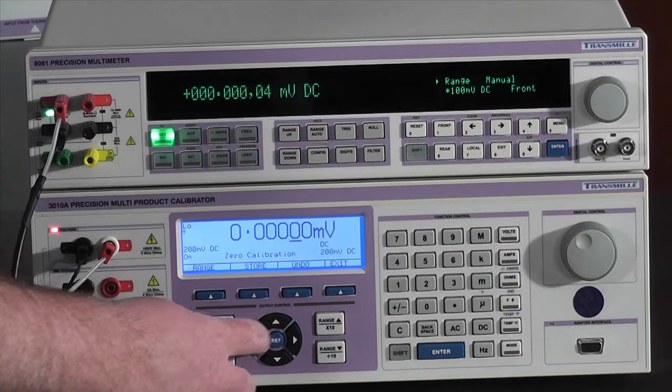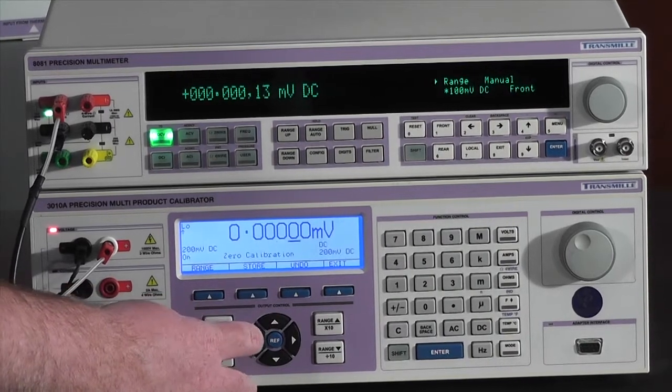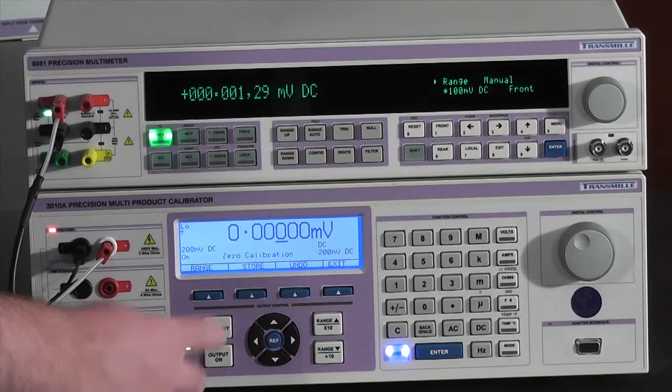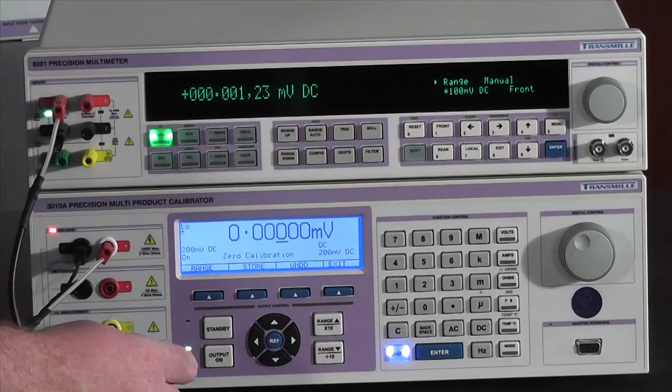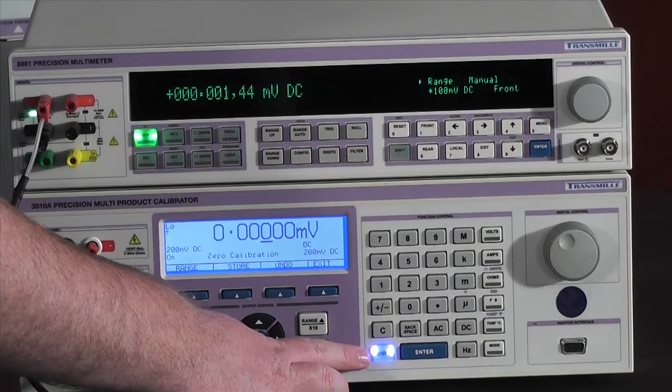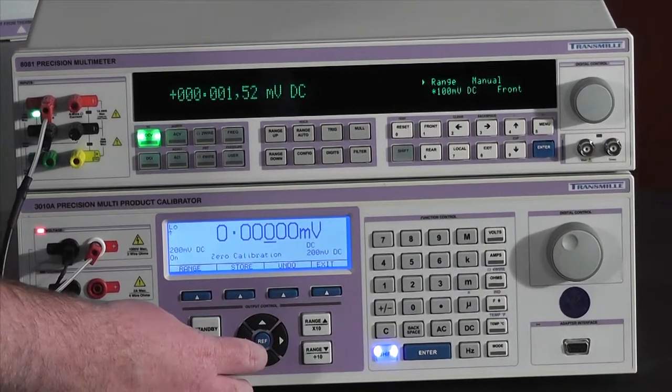You can trim this either using the cursor keys and making a change directly on the front panel. As you can see, I've made a large adjustment and the shift light has lit up to indicate that an adjustment has been made. I'm going to put this back now.